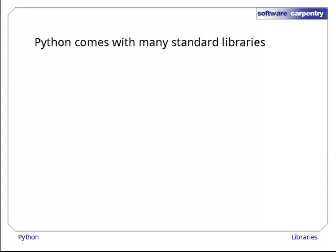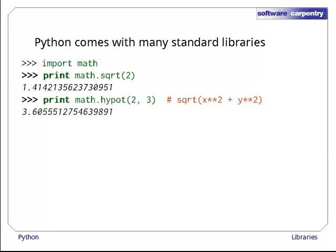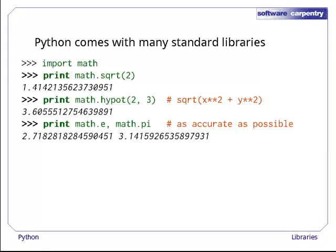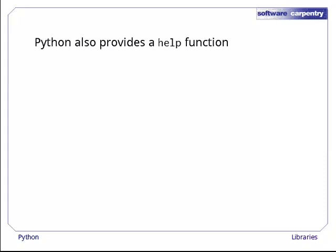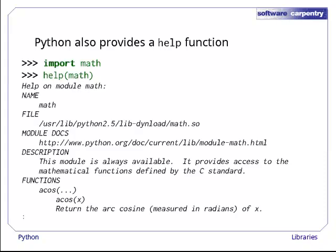Python comes with many standard libraries. One of the most useful is the math library, which defines square root for square roots, hypot for calculating x squared plus y squared, and values for e and pi that are as accurate as the machine can make them. To help you find your way around libraries, Python provides a help function. If math has been imported, the call help math prints out the documentation embedded in the math library.